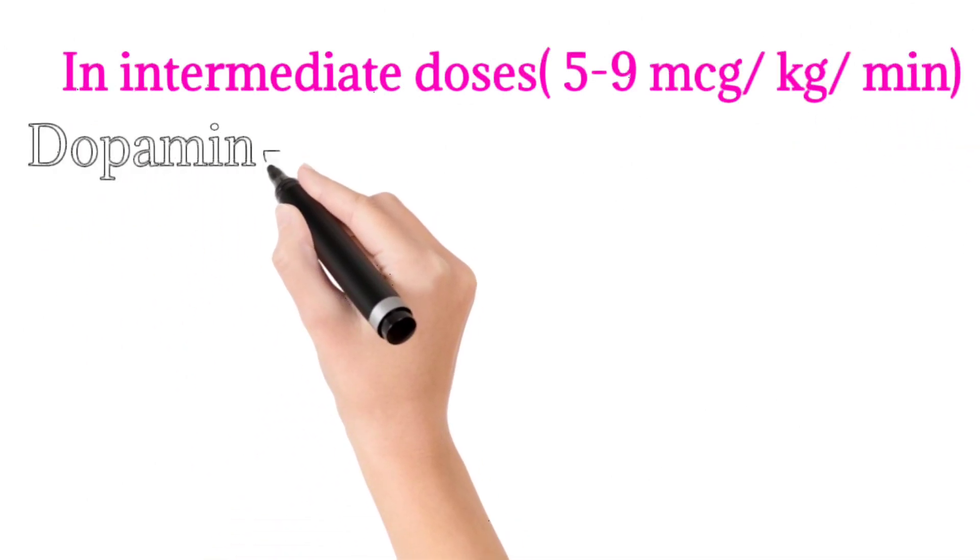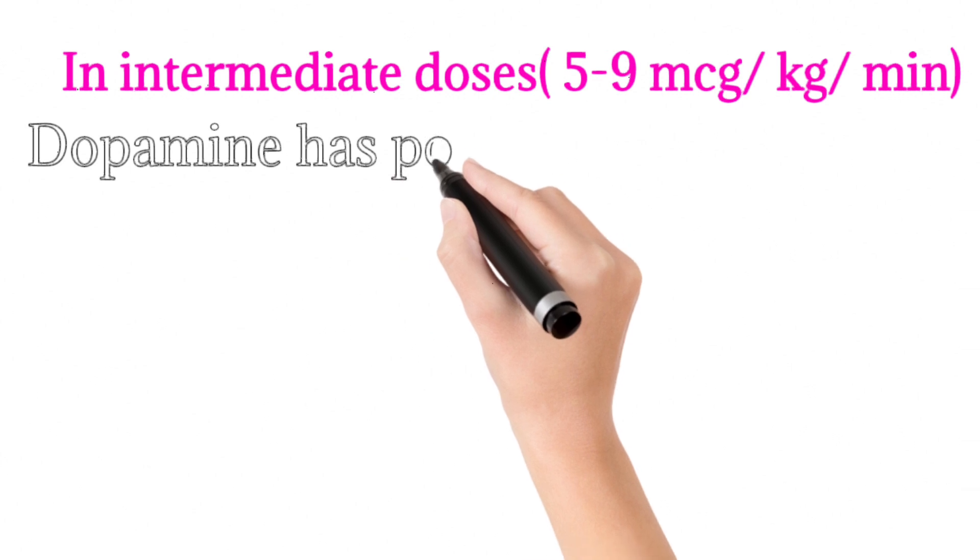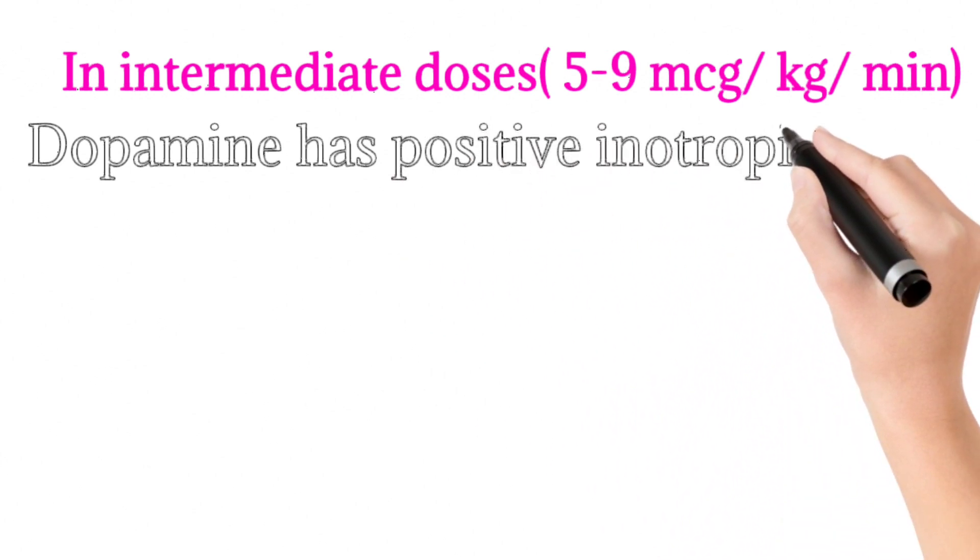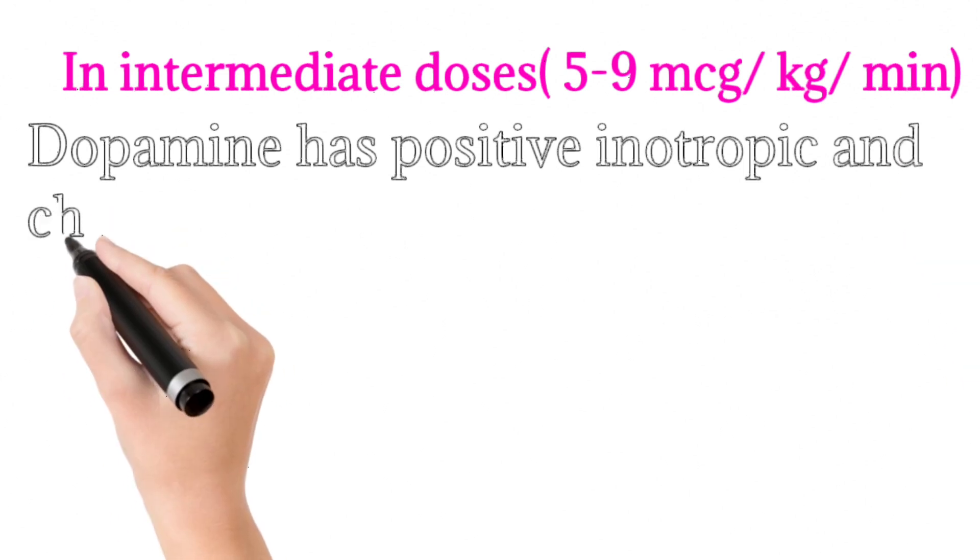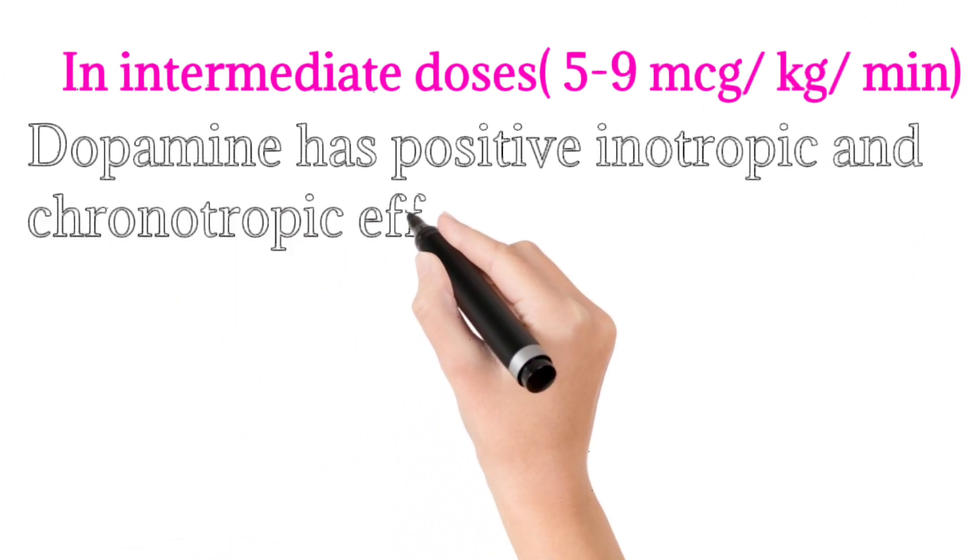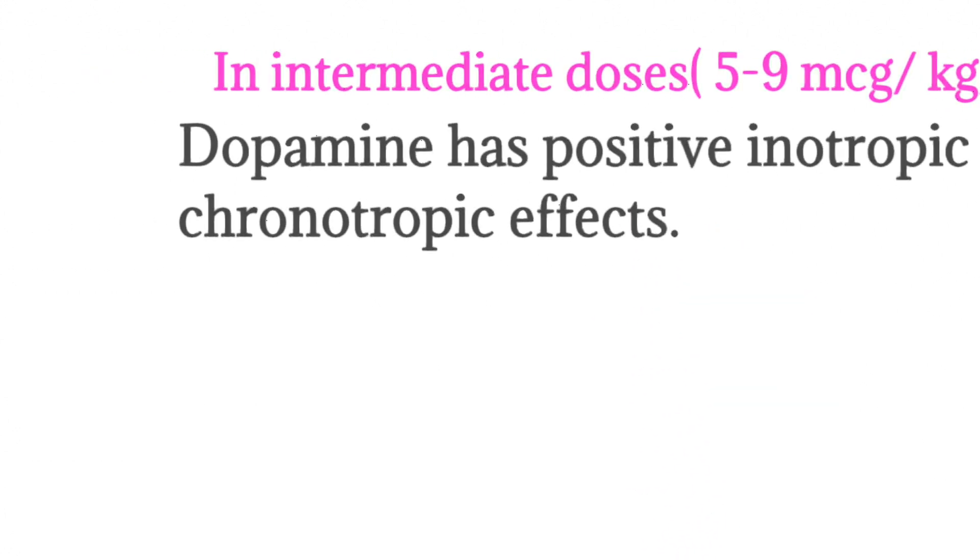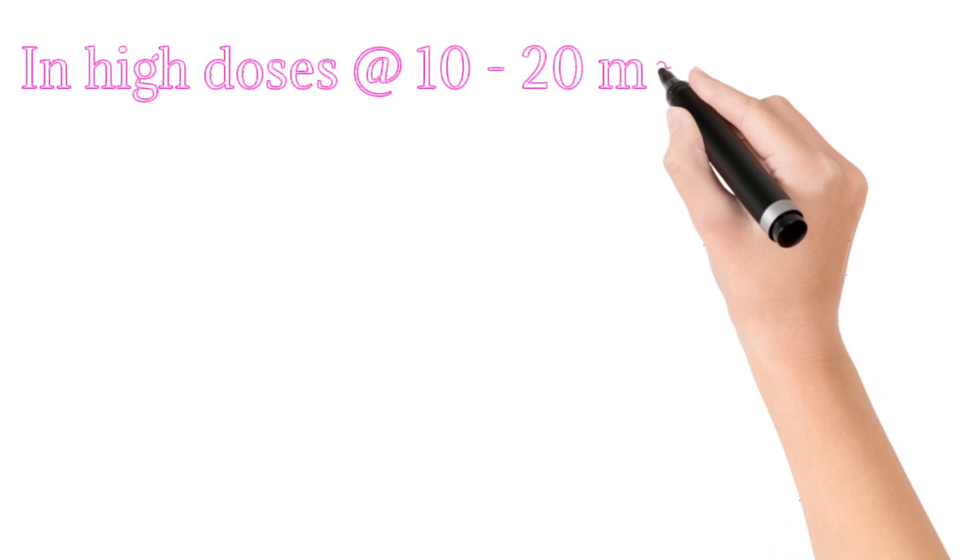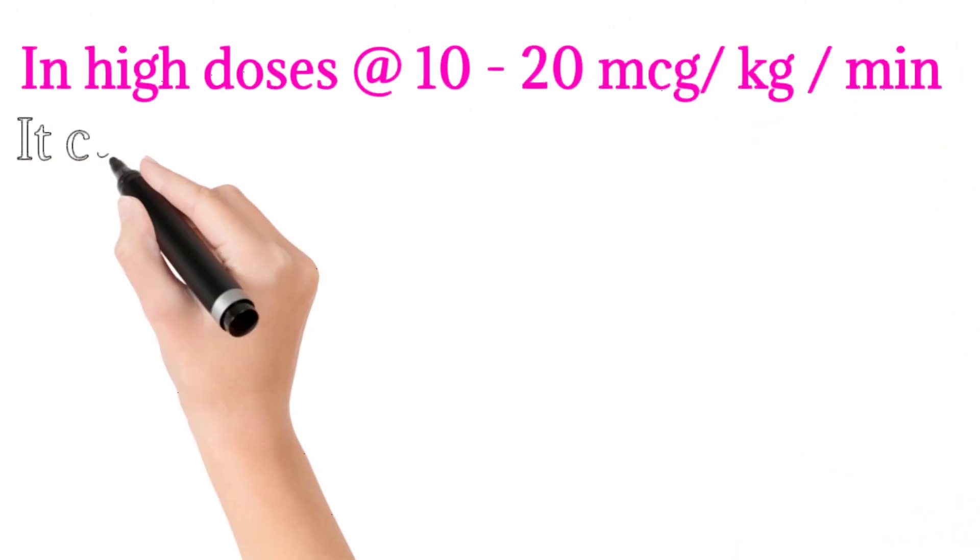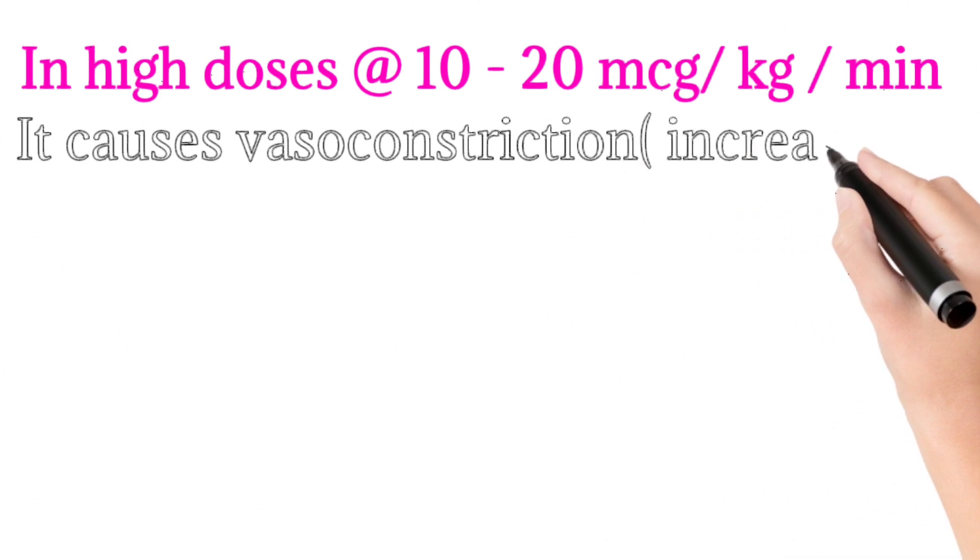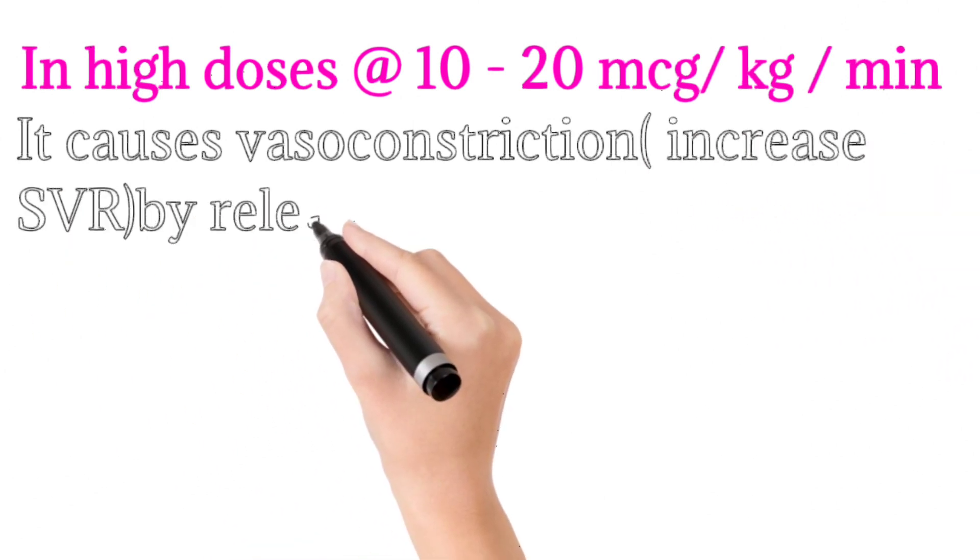At high doses, 10 to 20 micrograms per kilogram per minute, dopamine causes vasoconstriction and increases systemic vascular resistance by releasing norepinephrine from sympathetic vesicles, as well as acting directly on alpha adrenergic receptors.